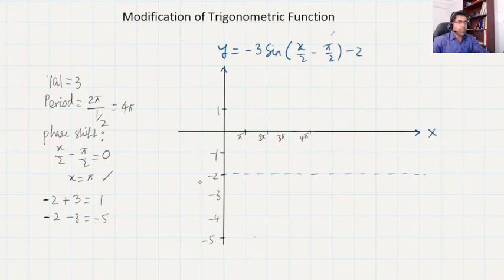So 4π, and it means in that 4π the complete circle will be completed because 4π is our period. But here you can see the phase shift is there. Our phase shift is x equals π. If x equals π is the phase shift, it means the y-axis is also shifting towards the right.